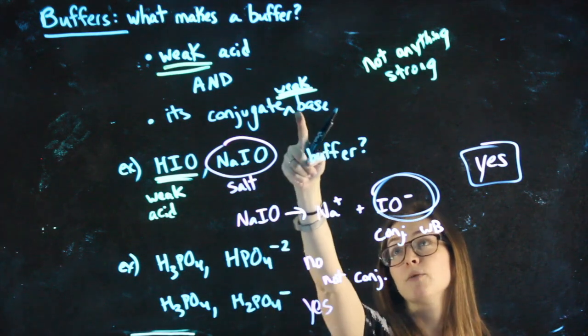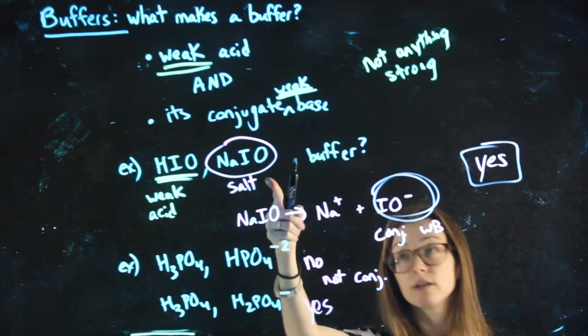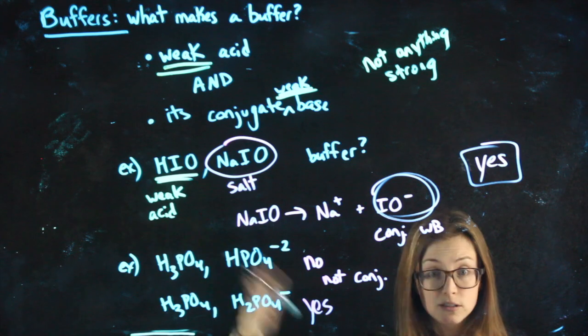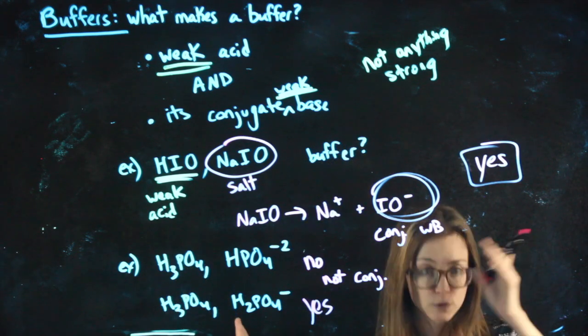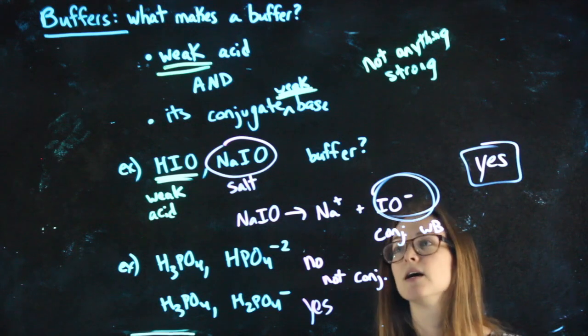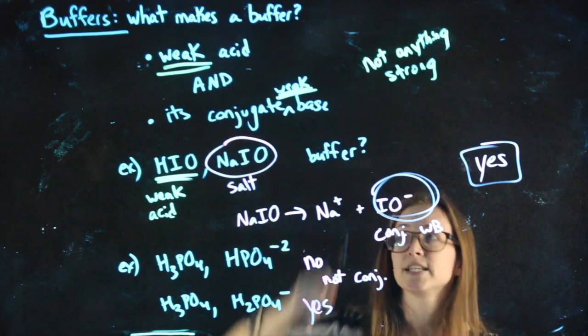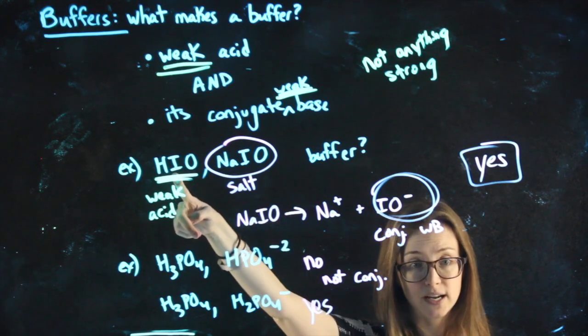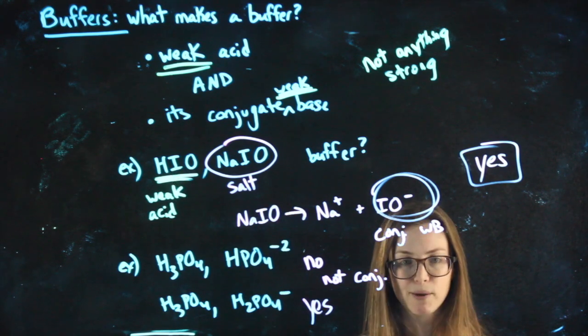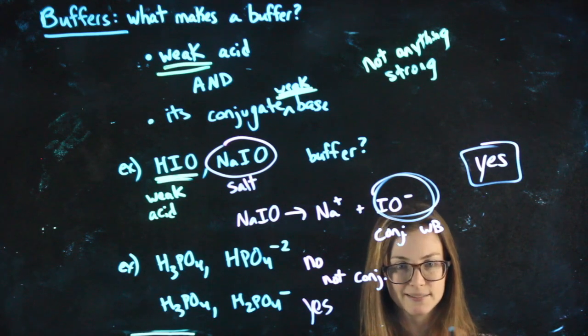So, again, the conjugate weak base could be hiding in the salt. Frankly, I could give you two salts, where one is hiding a weak acid and one is hiding the conjugate weak base. As long as you meet these two criteria, though, after breaking apart only the salts, don't break apart anything that's already weak, then you can have a buffer system. Practice. Practice.